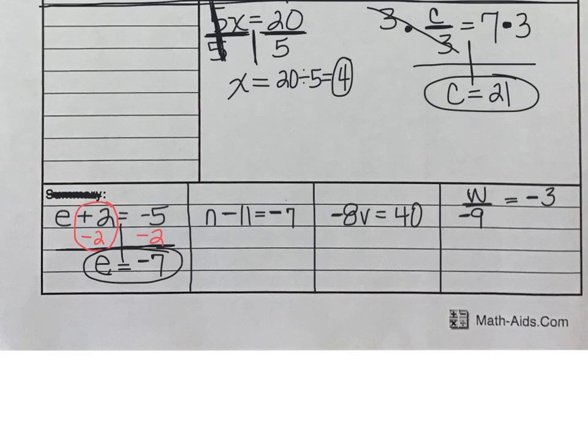Now let's try the second equation. This one involves subtraction. In order to undo subtraction, I need to do the inverse operation, which is addition. So I'm going to undo subtracting 11 by adding 11 to both sides. This time n is equal to negative 7 plus 11, which is 4.